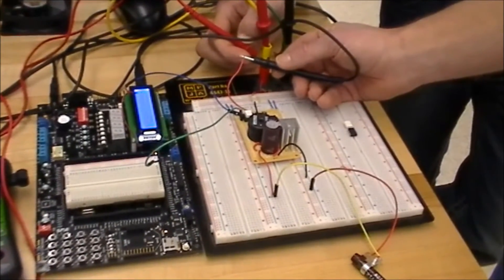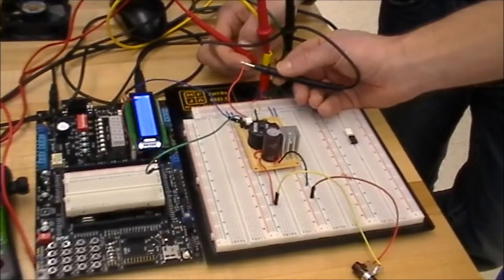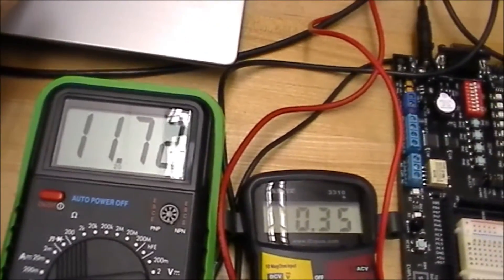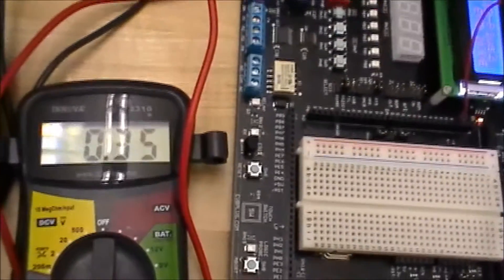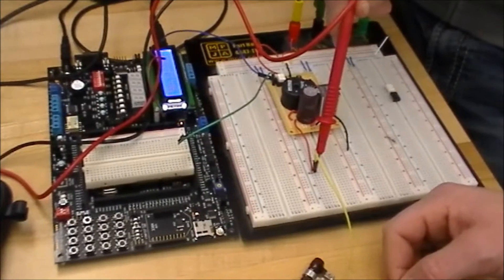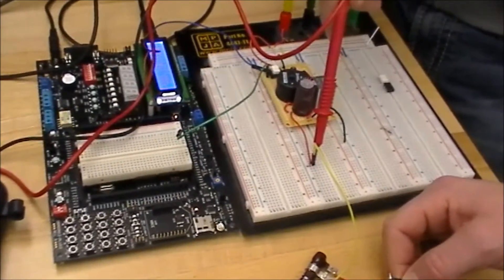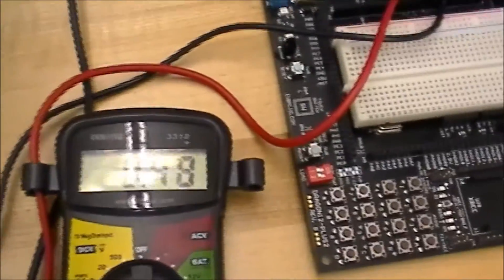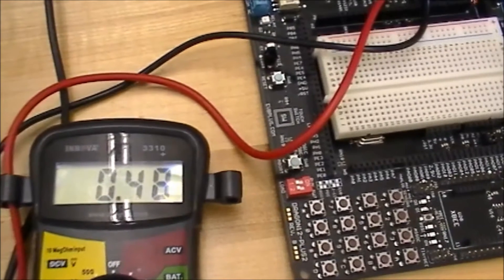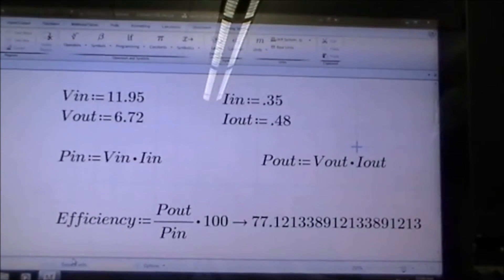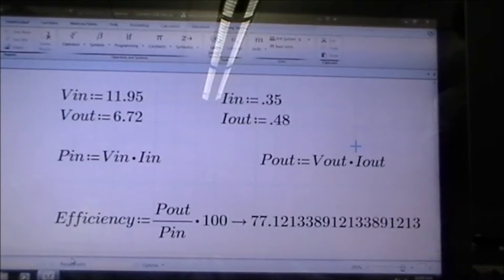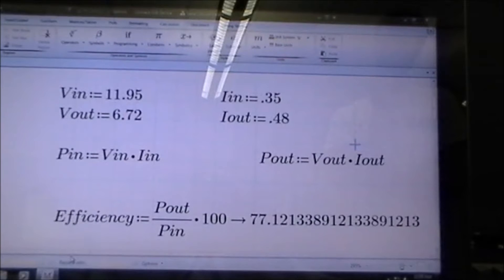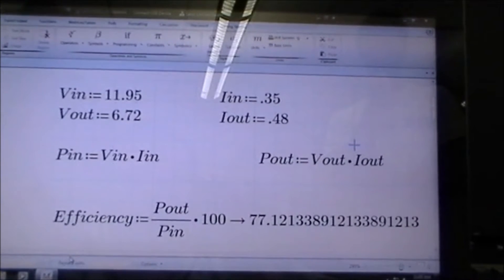We would like to show that our circuit meets the efficiency specifications above 60 percent. We are going to measure the voltage and the current of the input. We have a voltage of 11.95 volts and a current going through our circuit of 0.35 amps. Now we're going to show you the voltage across our load and the current that will go through our load. We have 6.72 volts and a current of 0.48 amps going through our load. Here we have our voltage input and output measurements and our current input and output measurements, so we can show you that our circuit has an efficiency above 60 percent. Actually, our circuit works a little bit even better - we have an efficiency of 77.12 percent.